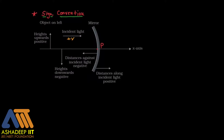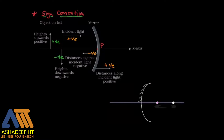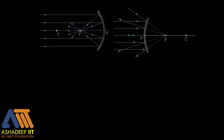Incident light direction will be positive. Distances in the direction opposite to incident light will be negative. Heights above the principal axis will be positive. That is how it goes — it is a normal Cartesian coordinate system, but you have to remember these rules.